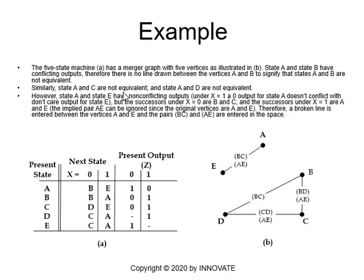States A and C are not equivalent, so there is no line between them. States A and D are not equivalent either, because they have different outputs. A and B, A and C, A and D all have different outputs, so there is no line between them. However, states B, C, and D have the possibility of equivalence because they share the same output: 0, 1, 0, 1, and don't care 1. So B could be equivalent to C, there is a line between them. B could be equivalent to D. But B cannot be equivalent to E and C cannot be equivalent to E, because E has different output.